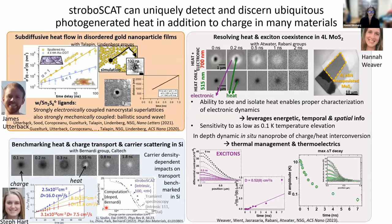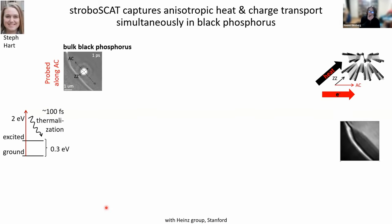Some work we've been doing in elemental semiconductor black phosphorus — you can think of it similarly to graphene, except it's a semiconductor whose band gap can be tuned by changing the number of layers. It can be exfoliated, and the material is very anisotropic structurally. We talk about the zigzag direction and the armchair direction — the atoms are actually zigzagging along one direction and there's a corrugation in the other, and that changes the charge carrier and thermal transport properties.